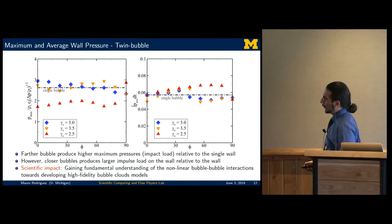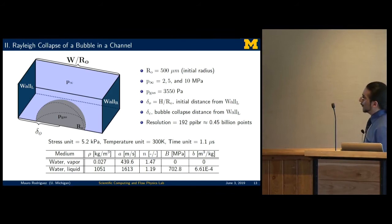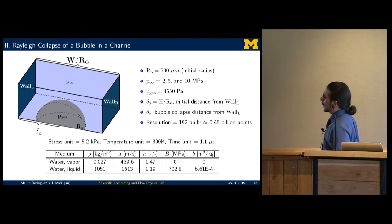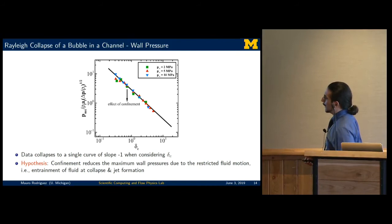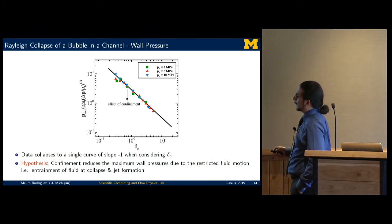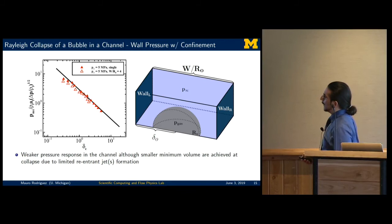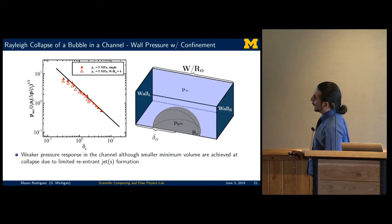As scientific impact, we gain fundamental understanding of these nonlinear bubble interactions and are hoping to develop this into high fidelity bubble cloud models. I'll quickly show you what happens when you collapse a bubble in confinement or in a channel in the left and right wall cases. What we would expect is that when we look at this normalization of the pressure versus the standoff distances, because those waves are still in the system, they're going to decrease the overall pressure that the bubble experiences. As a result, we would expect that confinement would decrease the actual pressures and the impact loads that we see along the walls. We actually see that for this specific configuration where we move the bubble closer and closer to the left wall, we see that decrease here for these kinds of simulations.